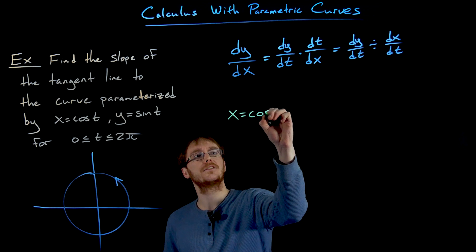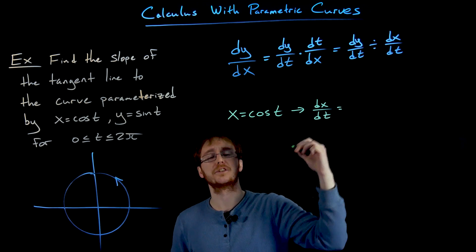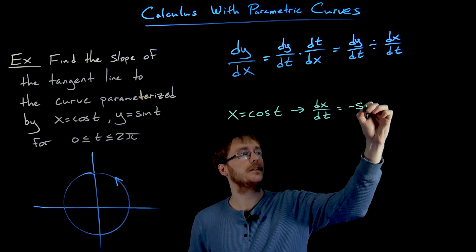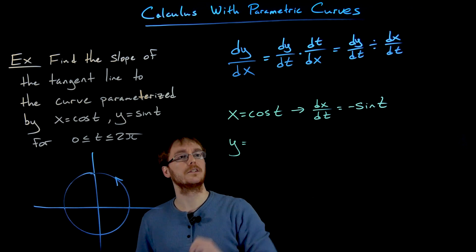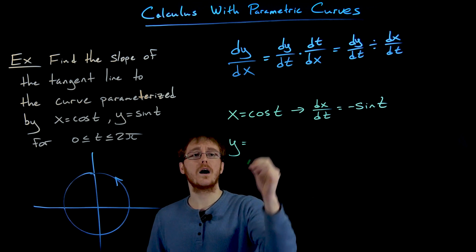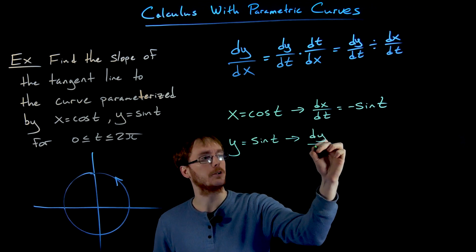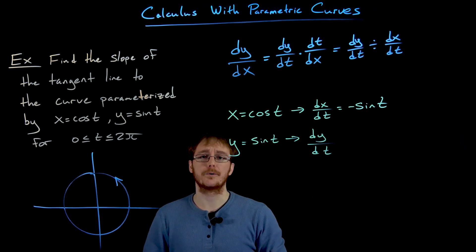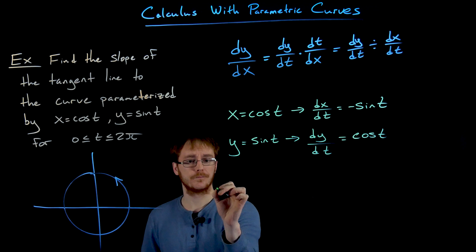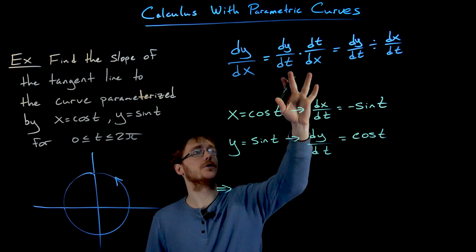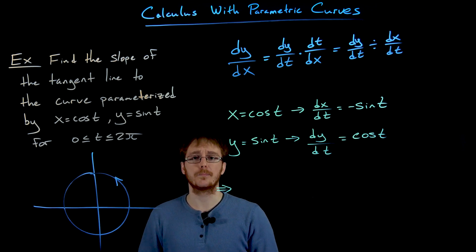We were told that x equals cosine of t, so if we differentiate that with respect to t we get negative sine of t as our derivative. We have to do the same thing for y — our parametric equation for y is y equals sine of t, and differentiating with respect to t gives us cosine of t. Now we have the pieces we need to use our chain rule formula to find dy/dx.